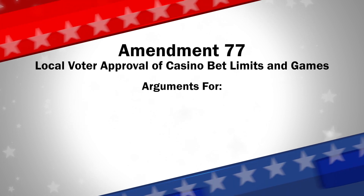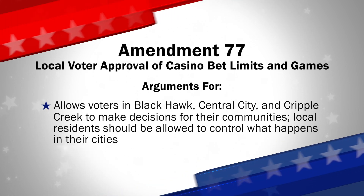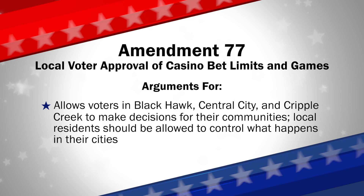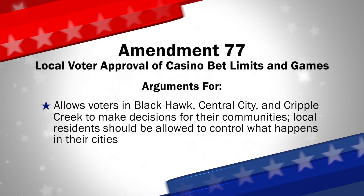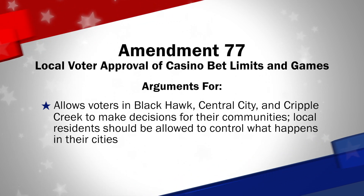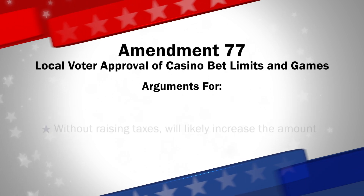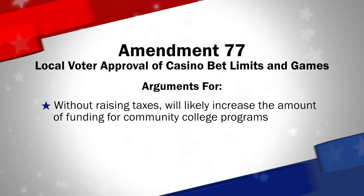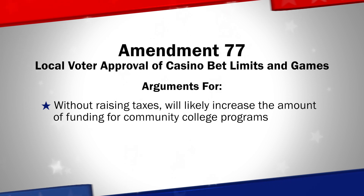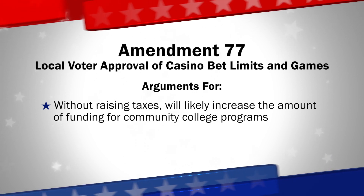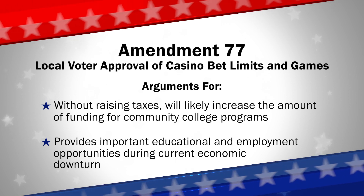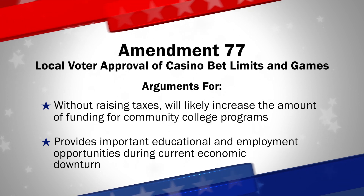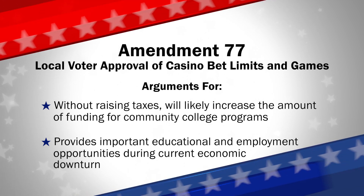Those in favor of Amendment 77 say it allows voters in Blackhawk, Central City, and Cripple Creek to make decisions that are best for their communities. Local residents impacted by changes to gambling in Colorado are best equipped to address the needs of their communities and should be allowed to control what happens in their cities. Without raising taxes on Coloradans, Amendment 77 will likely increase the amount of funding for community college financial aid, classroom instruction, workforce development, student retention, and degree completion programs. This additional revenue will help provide important educational and employment opportunities during this economic downturn.